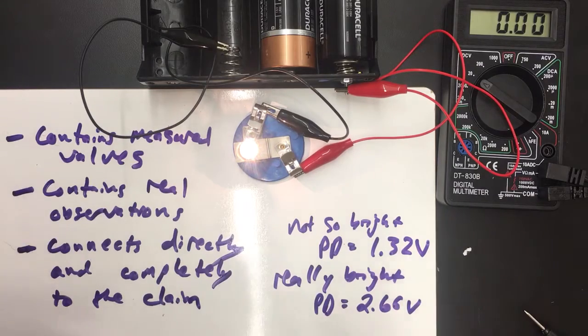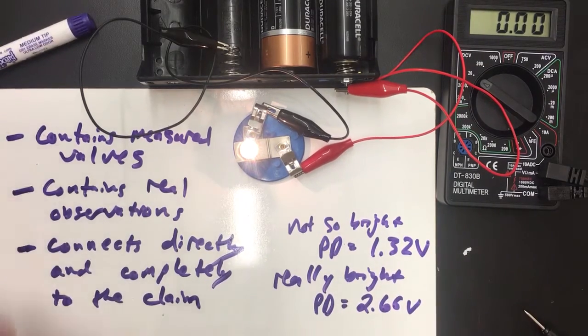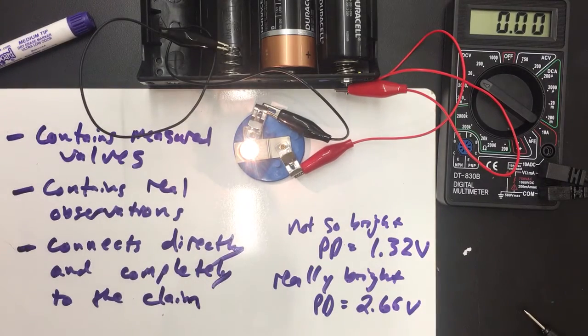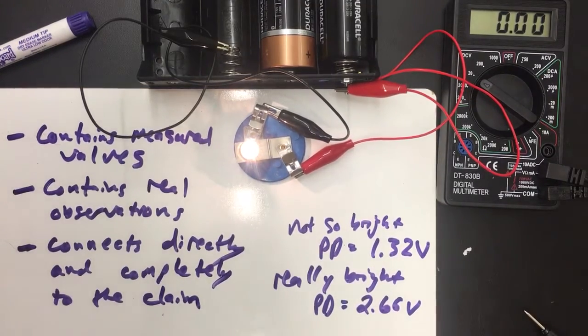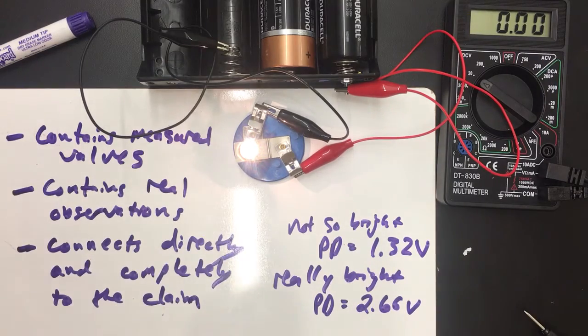You actually have data in your measurements, in your labs, to support this claim and to support all of the claims in the proof of concept document. It is your job to find those measurements or come into class and make those measurements again if you need to, to actually show the claim to be either valid or invalid.